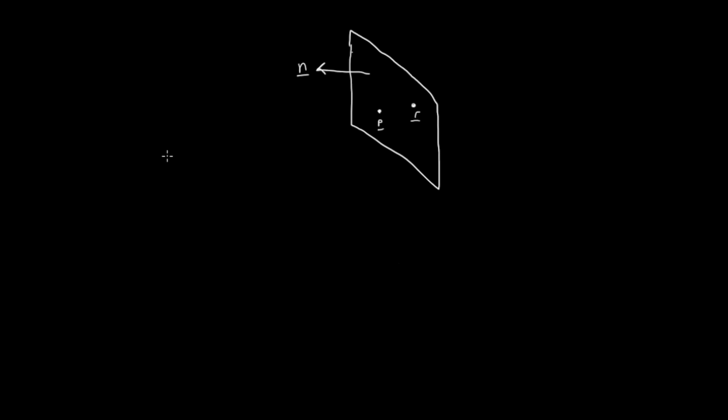Now, what I'm going to do to derive the vector equation of a plane is I'm going to use a dot product. Now, just recall that the dot product between any two vectors, A and B, is equal to the magnitude of A multiplied by the magnitude of B multiplied by the cosine of the angle between those two vectors. So I'm going to use the dot product between two vectors.